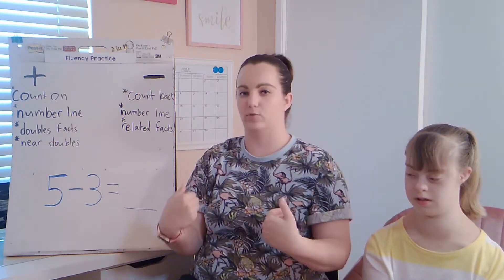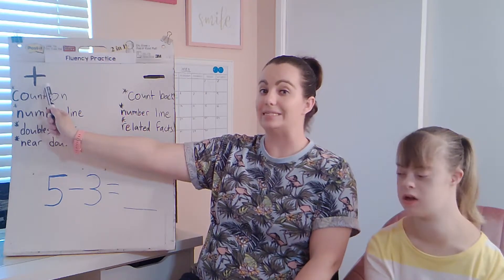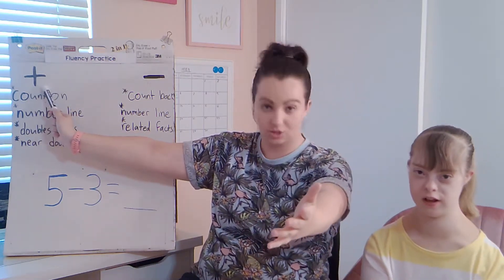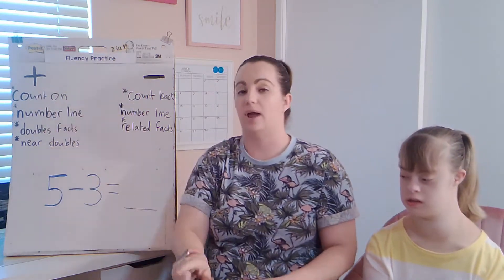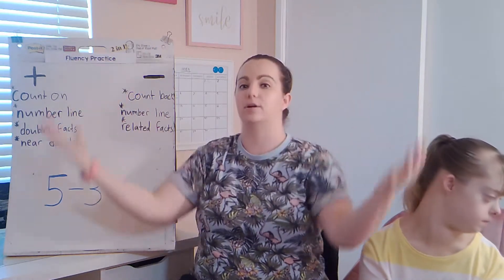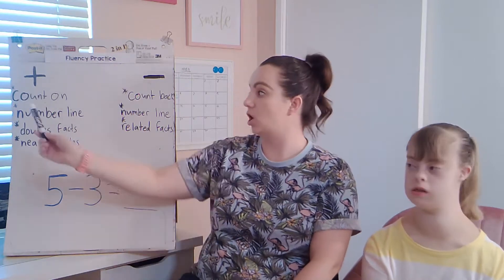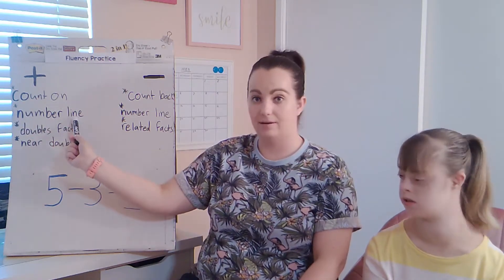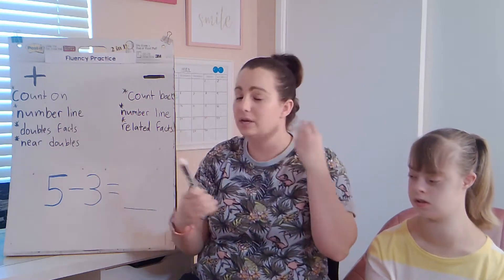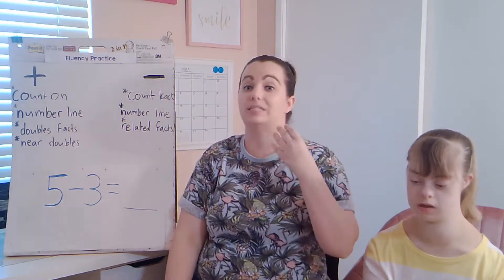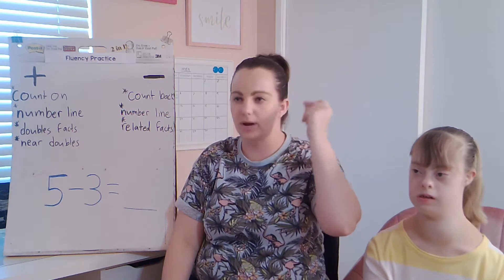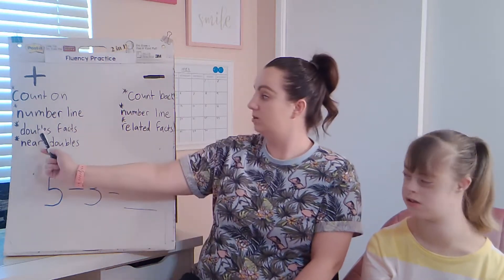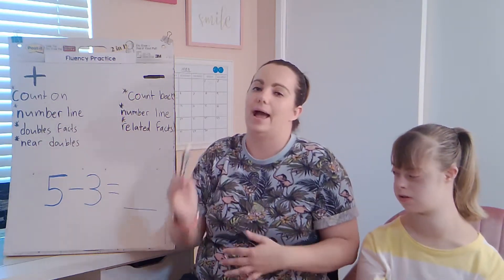Let's refresh our memory on some things. Up here, this is the plus sign — that means we're doing addition. You have two numbers; they're joining together to make a bigger number. Some of our addition strategies are: we can count on, starting with the big number and counting on; we can use a number line to add; we can use double facts. Hopefully as we're seeing more and more addition, we're learning some double facts we just know — we're able to recall and remember quickly. We can also use near double facts to help us solve addition. That's when you recognize something really close to a double fact, but you just have to add or subtract a little bit.